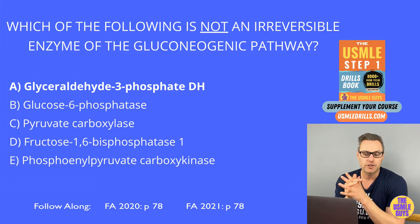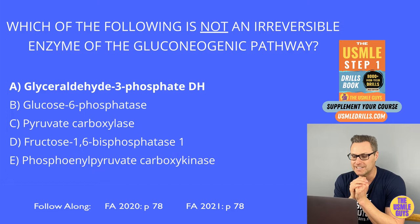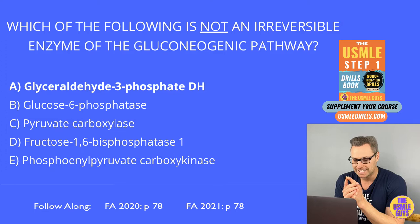First is pyruvate carboxylase. This is found in the mitochondria and is needed to convert pyruvate into oxaloacetate. This step requires ATP and biotin as a cofactor. Remember what activates this enzyme? That would be acetyl-CoA.